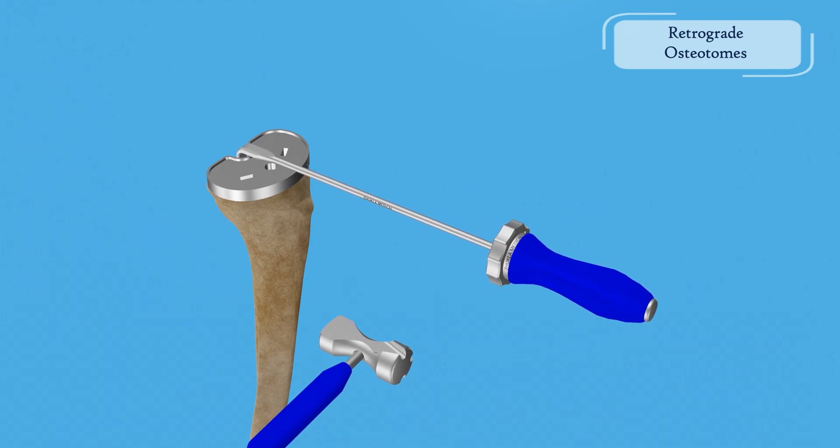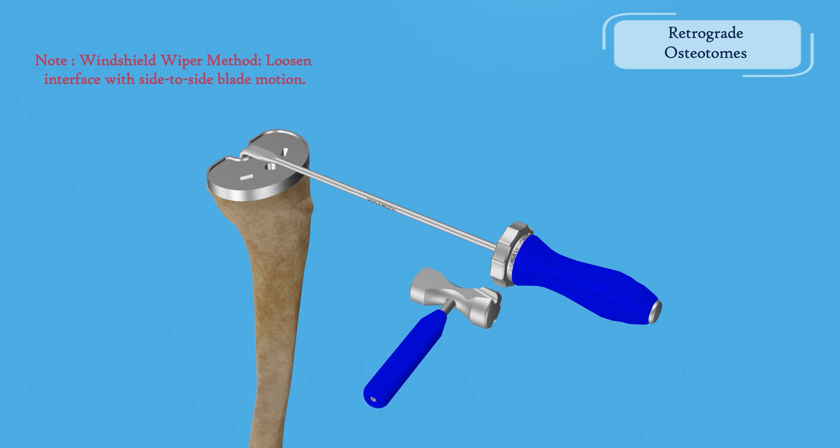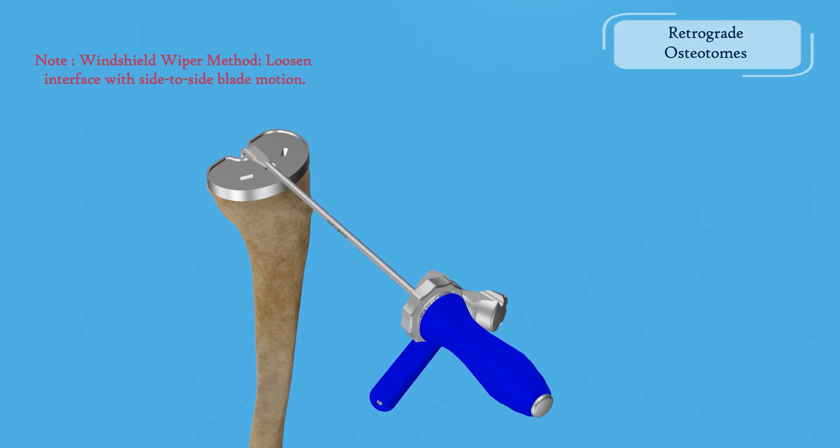Retrograde osteotomes use the grooved mallet to strike the handle, breaking the implant surface, and it slides along the osteotome to apply retrograde force.